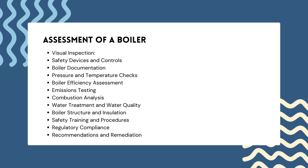Eighth, water treatment and water quality: assess the quality of boiler feed water and check for signs of scaling, corrosion or excessive deposits. Ninth, boiler structure and insulation: inspect structural integrity and insulation for signs of deterioration or damage. Tenth, safety training and procedures: ensure operators and maintenance personnel are adequately trained in safe boiler operation and emergency procedures. Eleventh, regulatory compliance: verify that the boiler complies with all local, state and federal regulations, including safety codes and emissions standards, and address any non-compliance promptly.